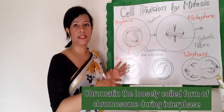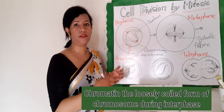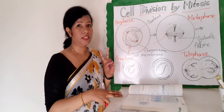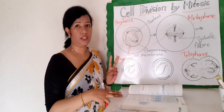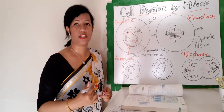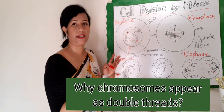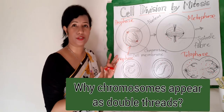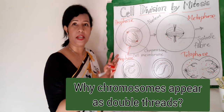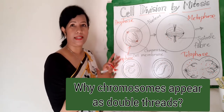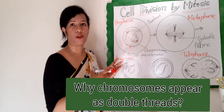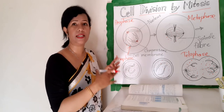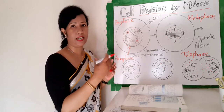Chromatin is the loosely coiled form of a chromosome during interphase of the cell cycle, and it is made of DNA and protein. The reason chromosomes appear as double structures is because they have made exact copies of themselves, and these copies are still attached to each other.